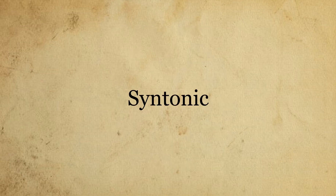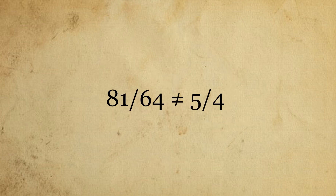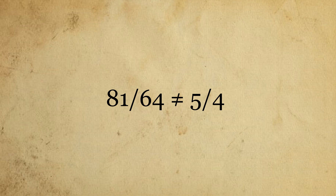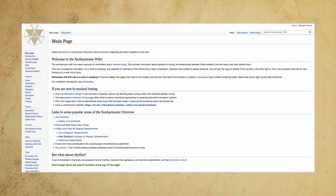Syntonic comma. As mentioned earlier, the syntonic comma is the difference between a pitch generated by stacking four pure fifths on top of each other, compared to a third with a 5:4 ratio. There are many, many other commas — check them out on the xenharmonic wiki if you want to go down that rabbit hole.